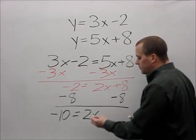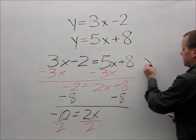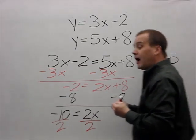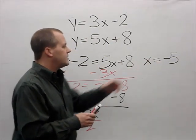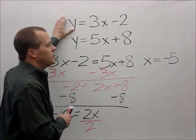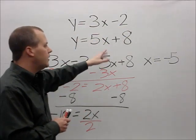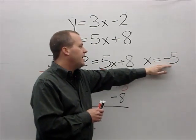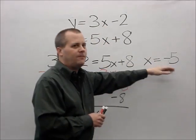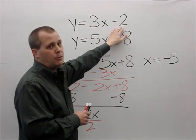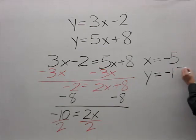The number in front of x is 2, so I divide both sides by 2. My answer is x equals negative 5. But I'm not done yet — I want to find the point of intersection, so I need to substitute x equals negative 5 into an equation. The top equation has the smaller number so I'll use that one: 3 times negative 5 is negative 15, minus 2 more gives negative 17.